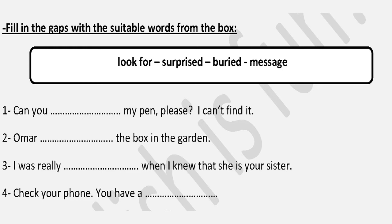Vocabulary exercise. Number one: 'Can you ___ my pen please? I can't find it.' Answer: Look for. Number two: 'Omar ___ the box in the garden.' What did Omar do with the box? He buried it. Number three: 'I was really ___ when I knew that she is your sister. I didn't know that, but when I did, I was really surprised.' Number four: 'Check your phone. You have got a ___.' Answer: message.